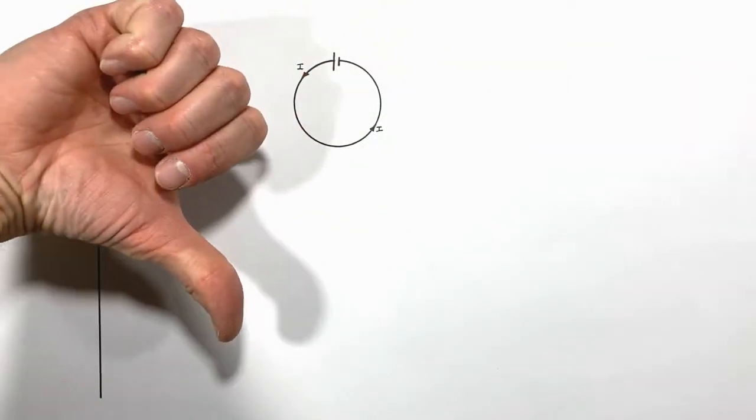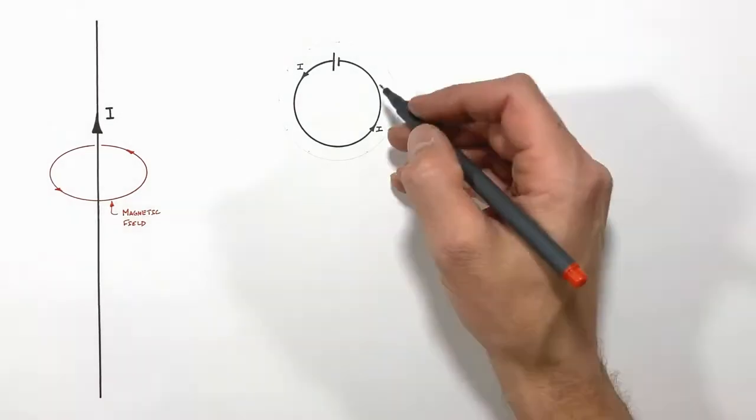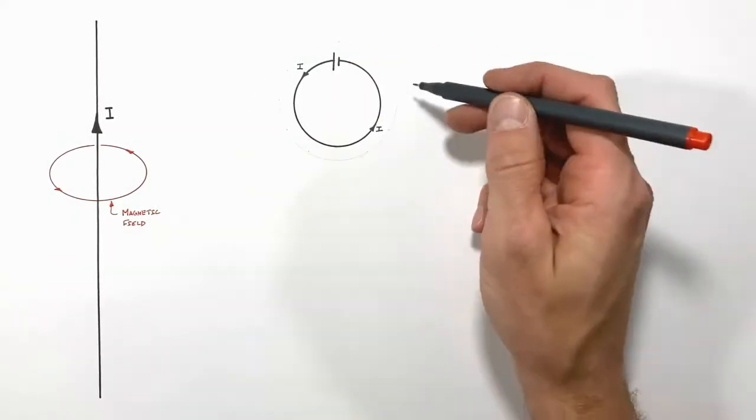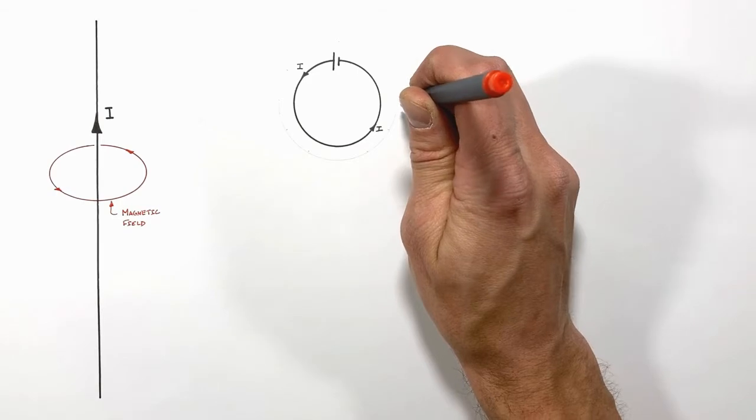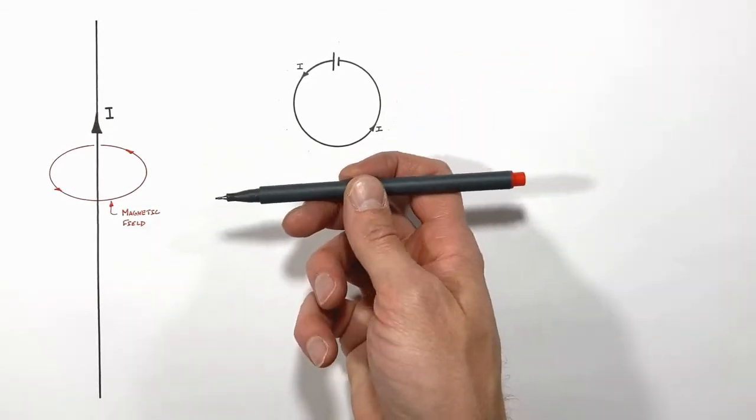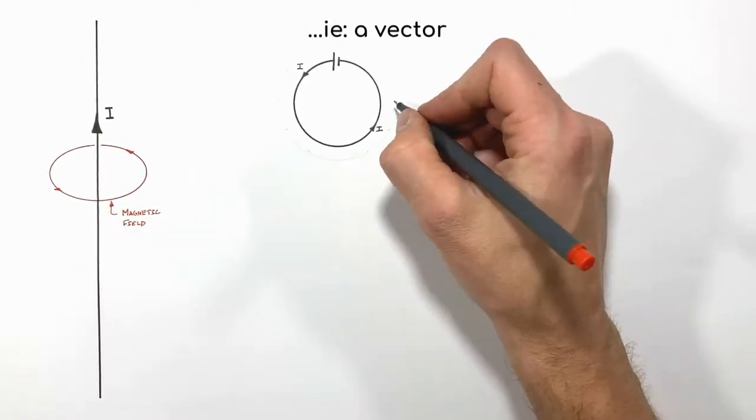To show a magnetic field that is running into the page, because that's in three dimensions, we're really trying to show an arrow going into the page. Imagine we had an arrow shot from above. If the arrow was going away from us, we would see the back edge of the arrow or the fletching or feathers.